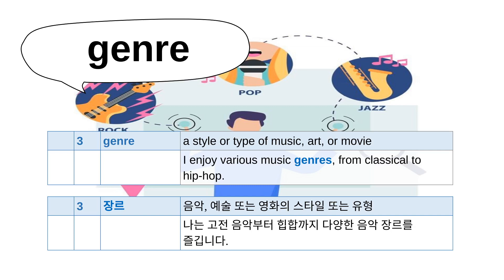Number three: genre. A genre is a style or type of music, art or movie. For example, I enjoy various music genres from classical to hip-hop.